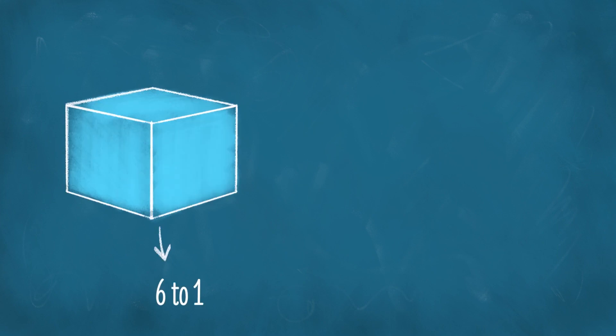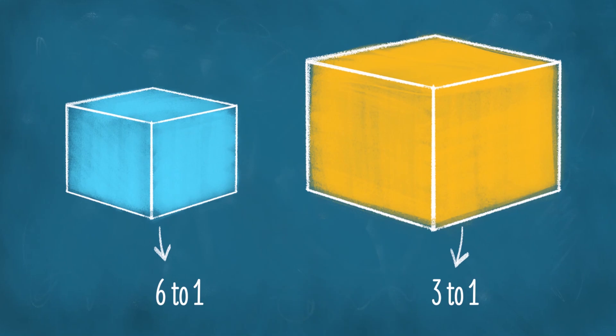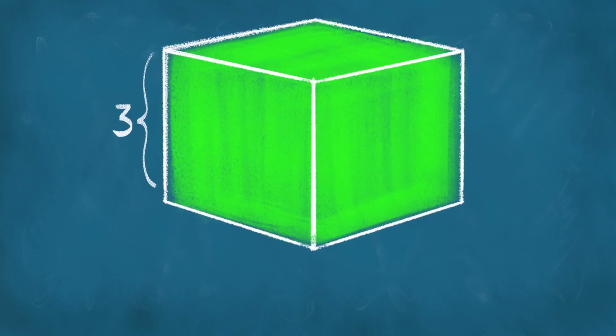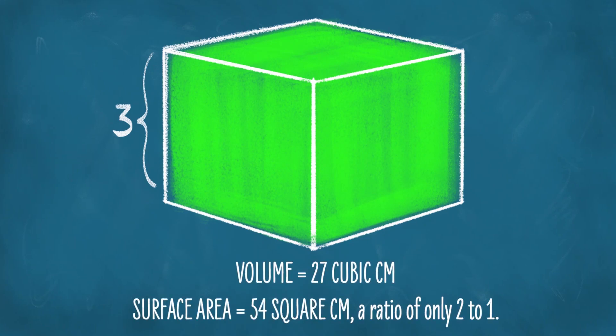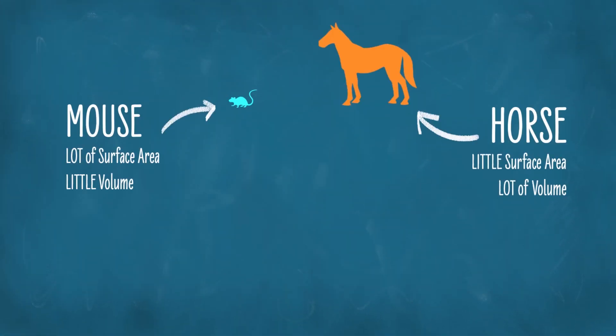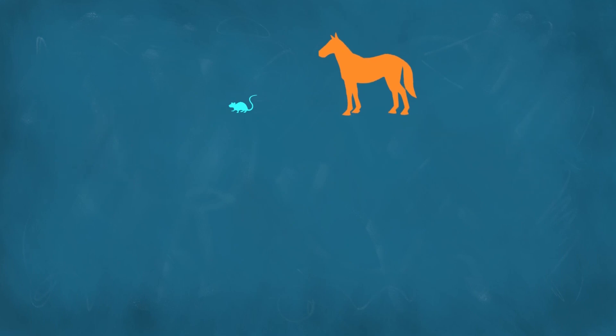The smaller cube had a surface area to volume ratio of 6 to 1, but by doubling the side length the ratio dropped to 3 to 1. If we make the side length 3 centimeters, the volume is 27 cubic centimeters and the surface area is 54 square centimeters — a ratio of only 2 to 1. As an object gets larger, the amount of surface area becomes progressively smaller compared to the volume. Volume has the most to do with weight, and surface area has the most to do with how well the object acts as a parachute for itself.